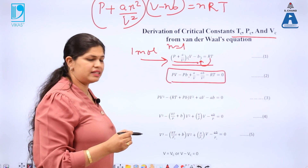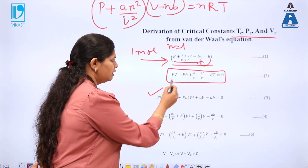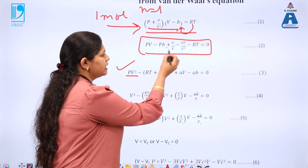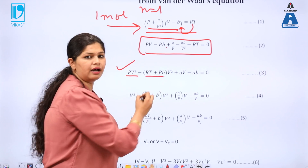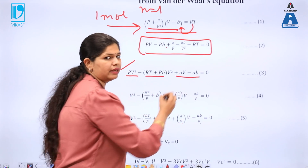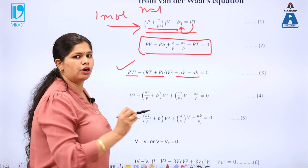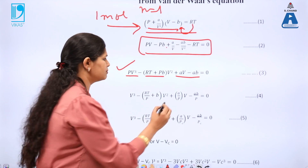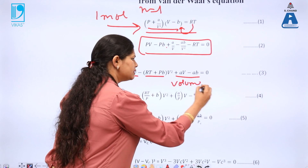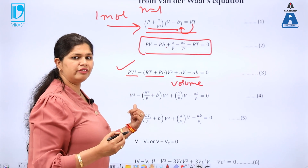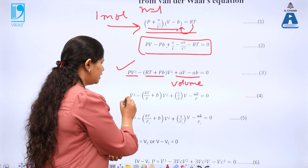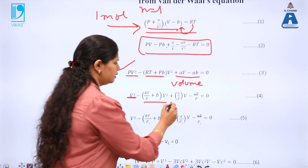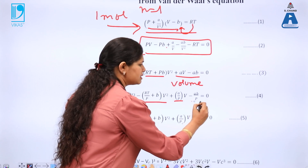After that, taking the LCM and multiplying through by V², the leading term becomes PV³. Taking the V² term common, we get RT + PB as a coefficient. Dividing through by P, we obtain a cubic expression in terms of volume: V³ with its coefficient, V² with its coefficient, V with its coefficient, and a constant term.